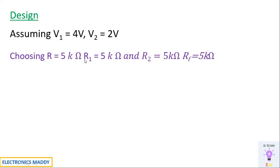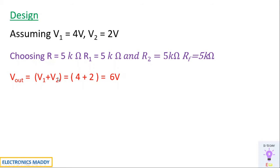You will get the same output with respect to the expected output signal. Vout is the sum of input voltages V1 and V2, which equals 6 volts. In the case of an inverting summer, there would be a negative sign — minus of (V1 plus V2) — because it produces a 180-degree phase shift with respect to the input terminals. That is the only difference.